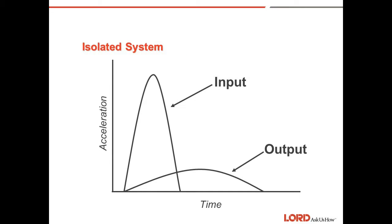Isolated system: In an isolated system, there is mitigation between the outside environment and the device. Energy input is dissipated over a longer period of time, so the peak acceleration is lower. We are not changing the area under the curve, but just increasing the time domain and reducing the acceleration level.